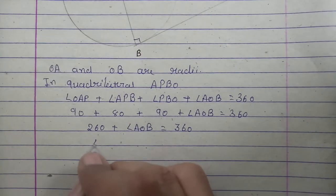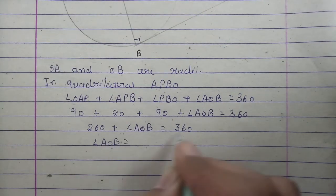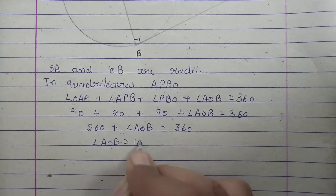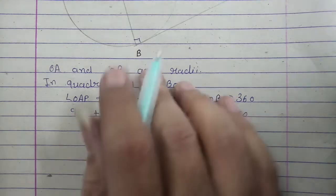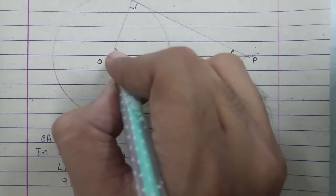Now if we take 260 to the right side, angle AOB will be 360 minus 260, that is equal to 100. So this whole angle we got is 100.